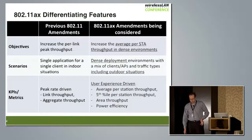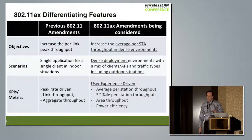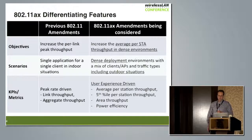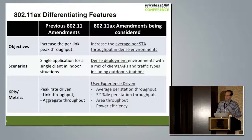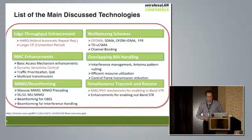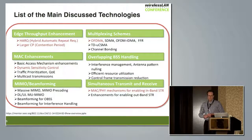Each new standard has to have differentiating features. For earlier standards the focus was on higher maximum throughputs and peak rates in indoor scenarios. AX is focusing on increasing the average throughput per station in dense environments. It is user-experience focused, and the key target is to improve the low-performing clients, not only to maximize individual client throughputs.